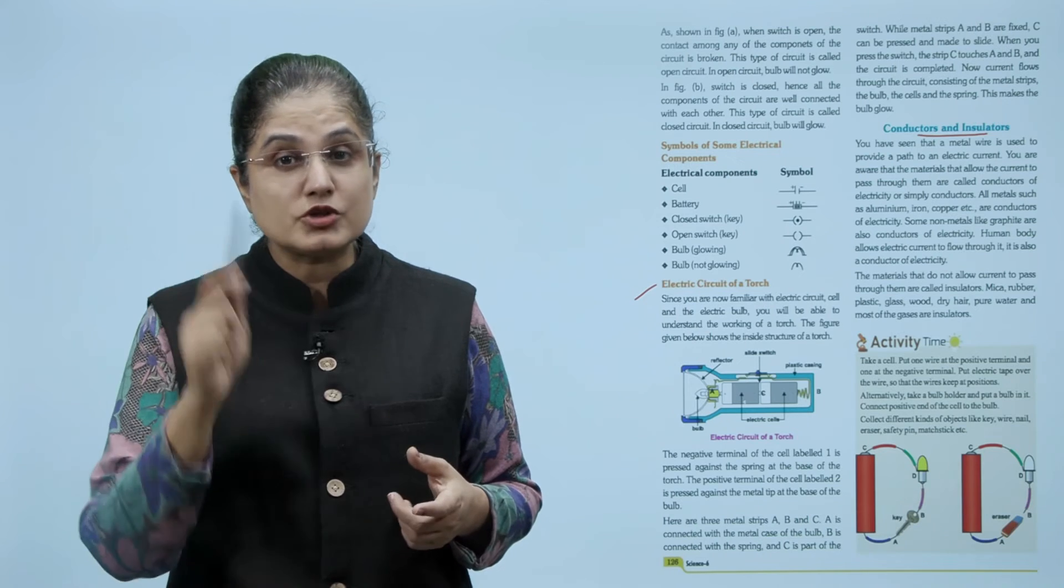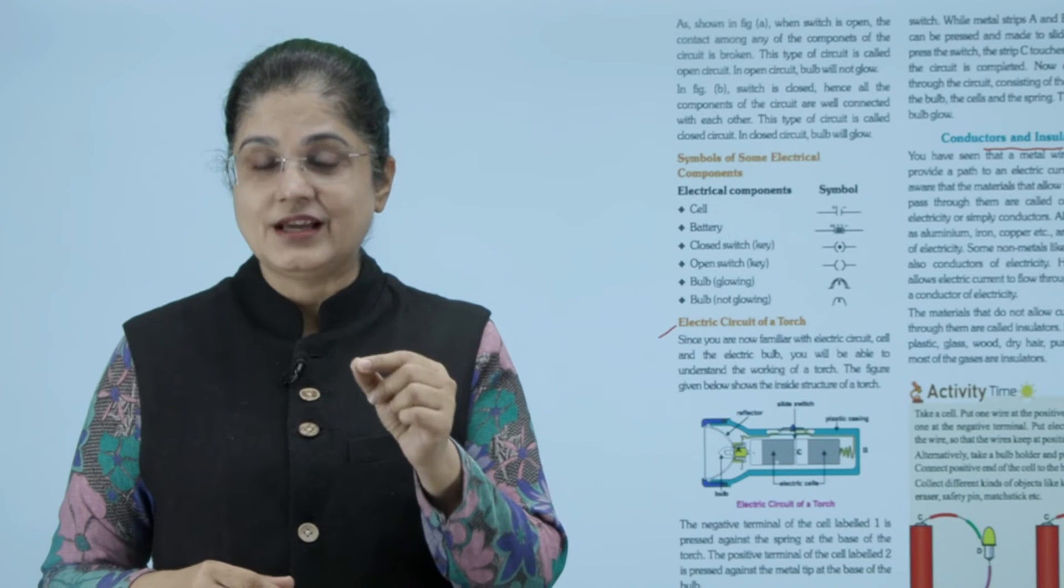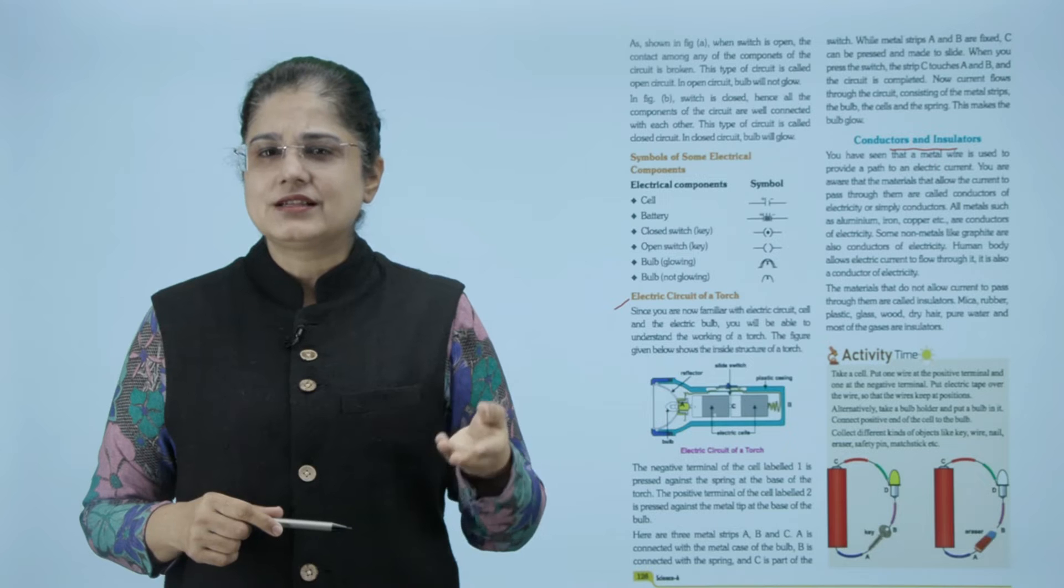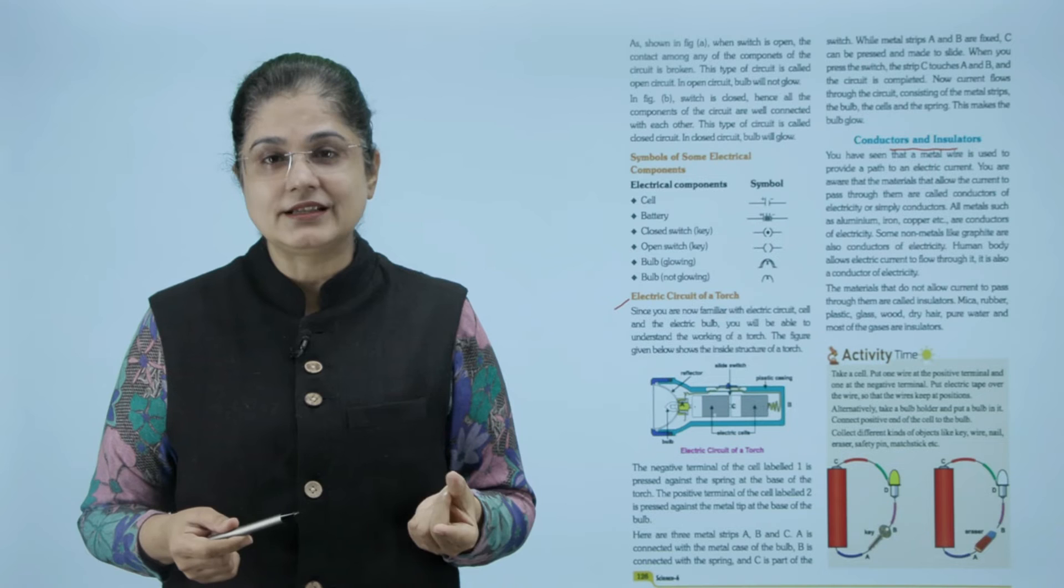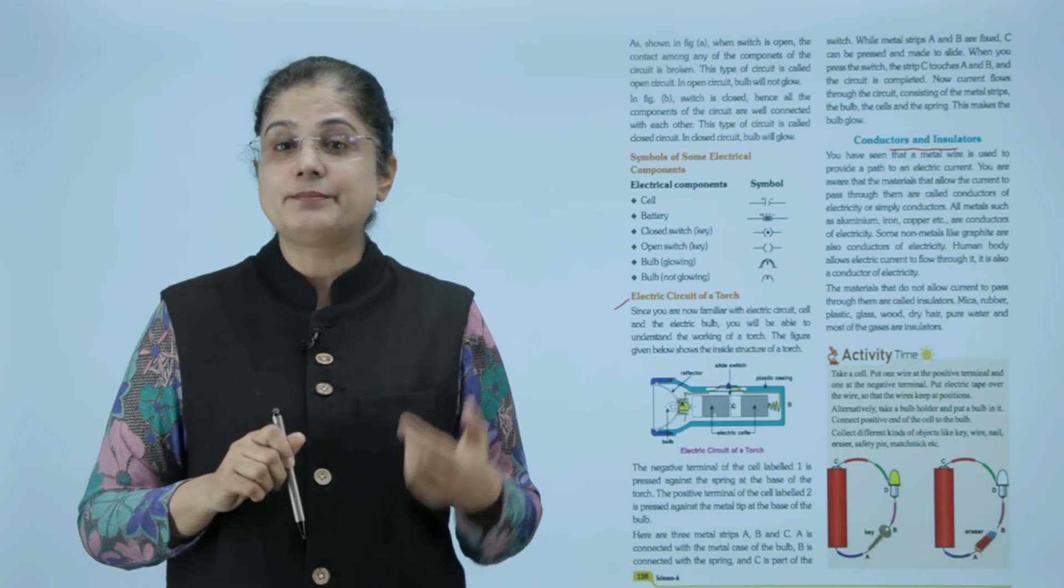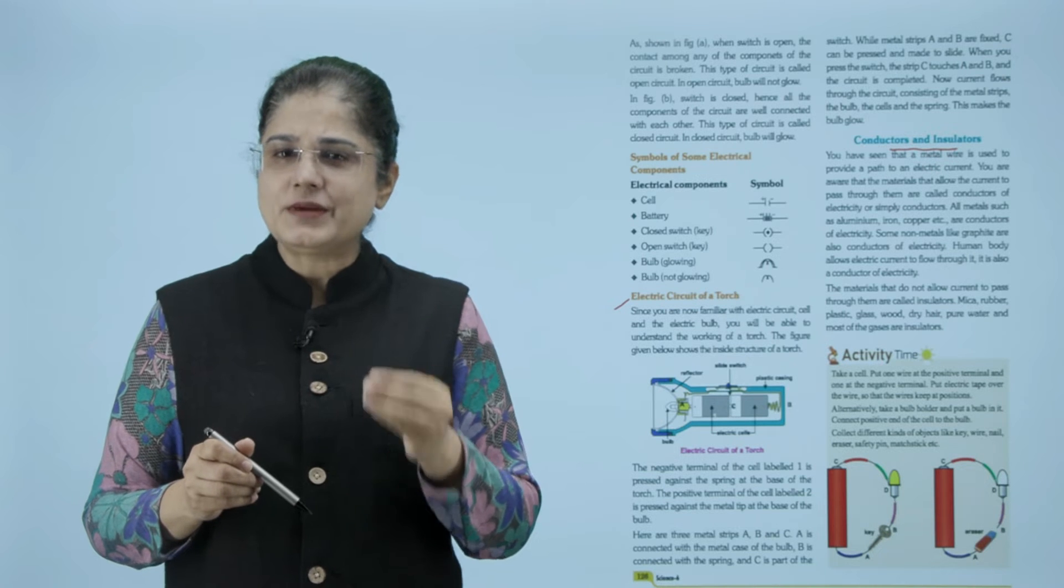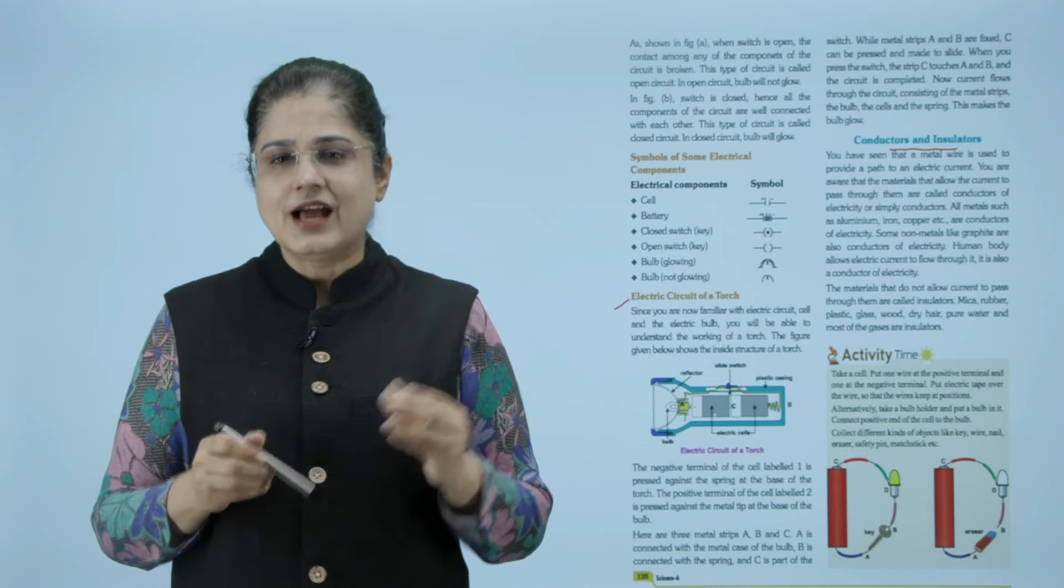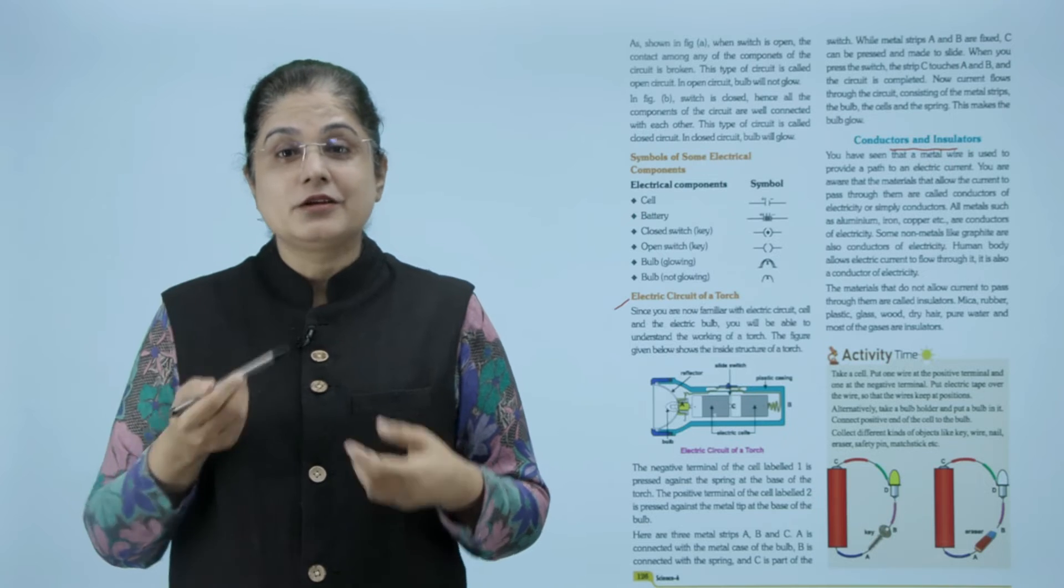Mica, rubber, plastic, glass, wood, dry air, pure water and most of the gases are insulators. जिन materials में या जिन चीज़ों में electric current pass होता है उन्हें कहते हैं conductors. अब conductors में हमारा काफी सारी metals आती हैं, graphite जैसी non-metals भी हैं और हम human body देखी तो हमारे through भी electric current pass कर सकता है तो हम भी conductor वाली category में आते हैं। और जिन चीज़ों में से electric current pass नहीं होता उन्हें कहते हैं insulators, जैसे की अब के mica, rubber, plastic, glass, wood, dry air, pure water, ये सब क्या है और बहुत सारी gases, ये सब किस में आ गई insulators में।